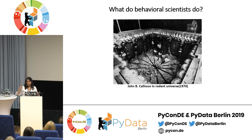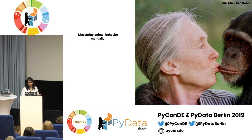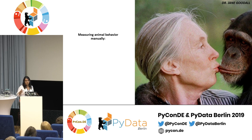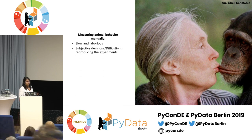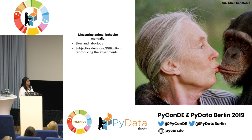They would define these steps in animal behavior — aggressive behavior increased and female care decreased. Until now I've shown animal behavior measured manually. What we see is that observing animal behavior manually is slow and laborious, the experimenter makes subjective decisions, and this causes difficulty in reproducing experiments.